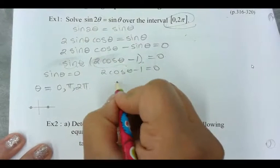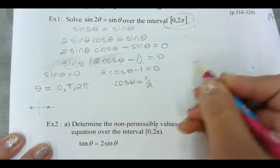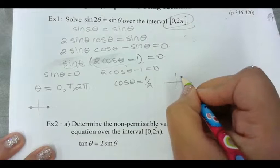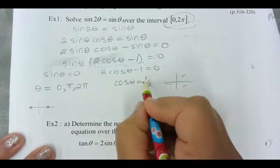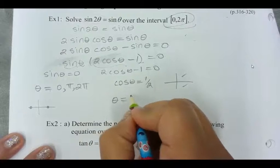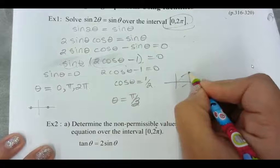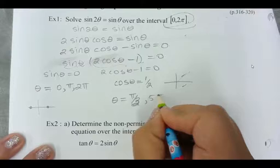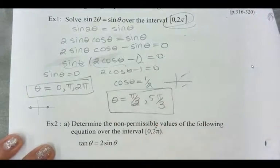For this one, we end up with cos theta equals a half. Which quadrants do we have a positive value for cos? Here and here. And what value of theta do we get? Our reference angle in the first quadrant here is pi by 3. And this is going to be 5 pi by 3. So all of these are your solutions.